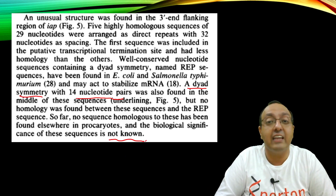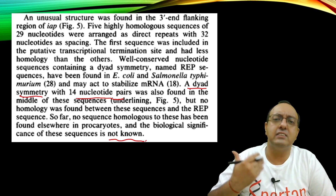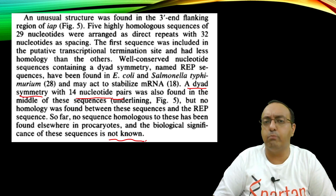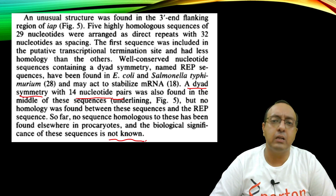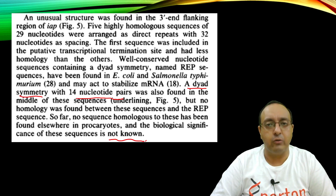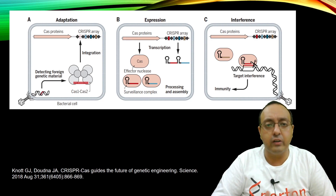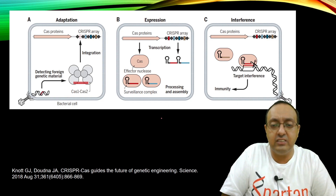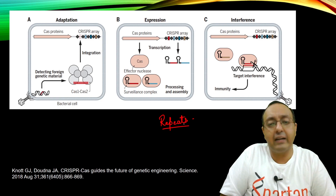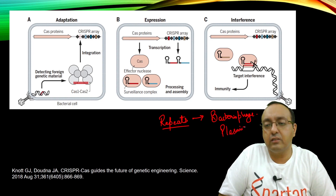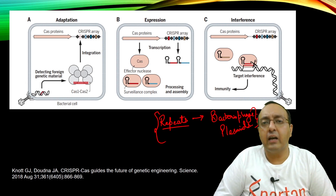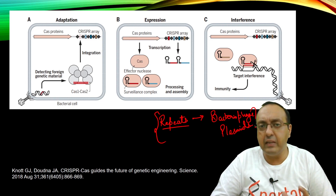Remember, this is 1987, so gene sequencing had just started and there were not a lot of bioinformatics tools to mine genome sequences from many bacteria. It had to wait until there was a mass explosion in multiple bacterial and viral genomes being available. Later, bioinformatics analyses revealed that these repeats were actually from bacteriophage sequences and plasmid sequences.